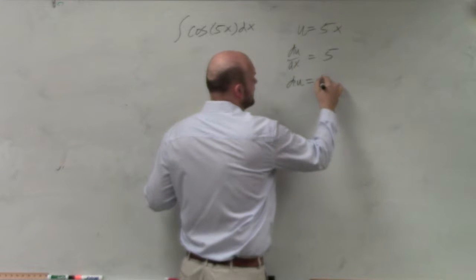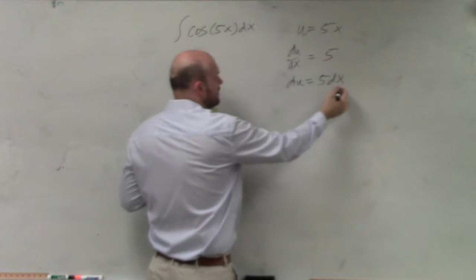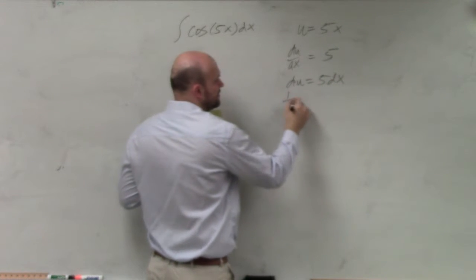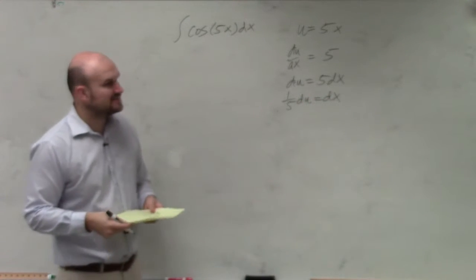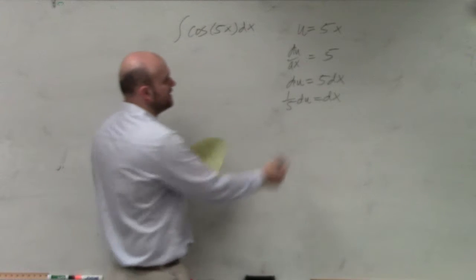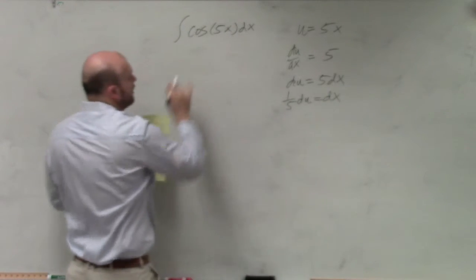So if du equals 5 dx, well, then I can just rewrite that and say 1 fifth du is equal to dx, right? Just divide by 5 on both sides.